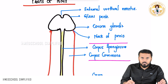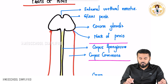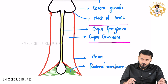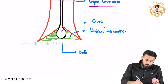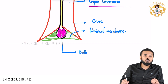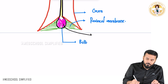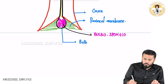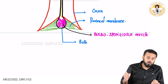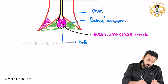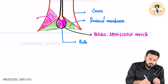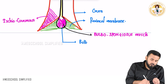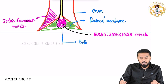So the structures we discussed are: external urethral meatus, glans penis, corona glandis, neck of the penis, corpus spongiosum, corpus cavernosa, the crura, the perineal membrane, and the bulb. In the bulb region there is a special muscle called the bulbospongiosus muscle, and in the crura there is a muscle called the ischiocavernous muscle.